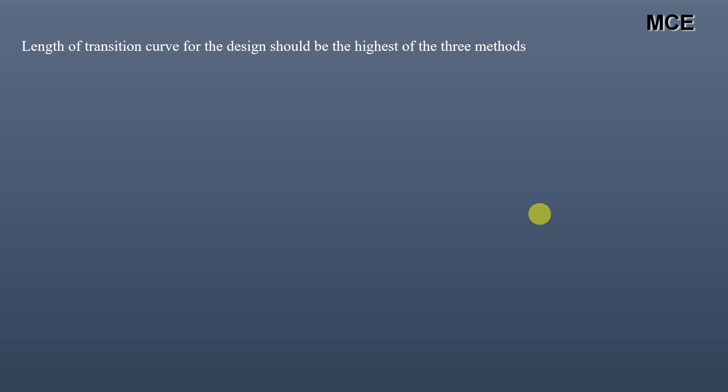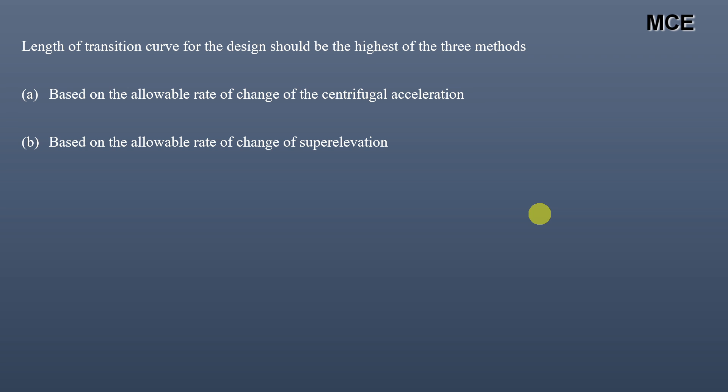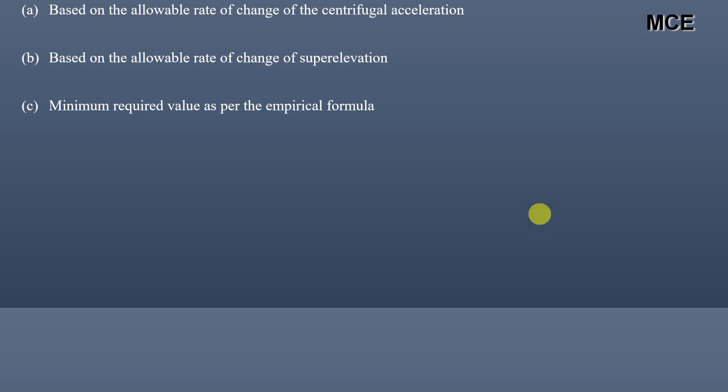According to the IRC, the length of the transition curve for design should be the highest of three methods: the first is based on the allowable rate of change of centrifugal acceleration, the second is based on the allowable rate of change of super elevation, and the third is the minimum required value as per IRC's empirical formula.